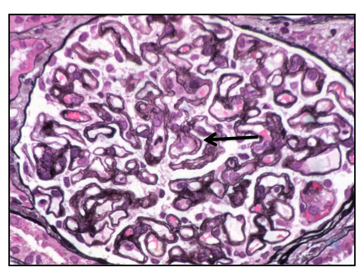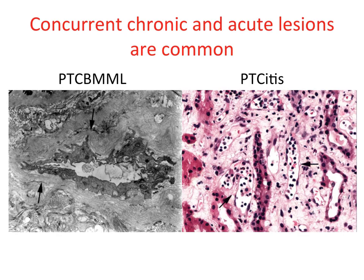The hallmark in the glomeruli of chronic antibody-mediated rejection is transplant glomerulopathy, characterised by evidence of membrane splitting on a silver stain, as demonstrated by the black arrow in this high-power field. Remember that membrane splitting is by no means exclusive to transplant glomerulopathy. You can also see acute and chronic lesions at the same time — the left panel shows an electron micrograph of a peritubular capillary with typical basement membrane multilayering, while the right panel from the same biopsy shows a convincing mononuclear infiltrate in the peritubular capillaries.